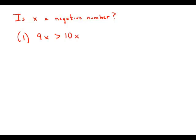Well there are a few ways to think about this. I think the simplest thing, I'm just going to subtract 9x from both sides. What I get is 0 is greater than x.